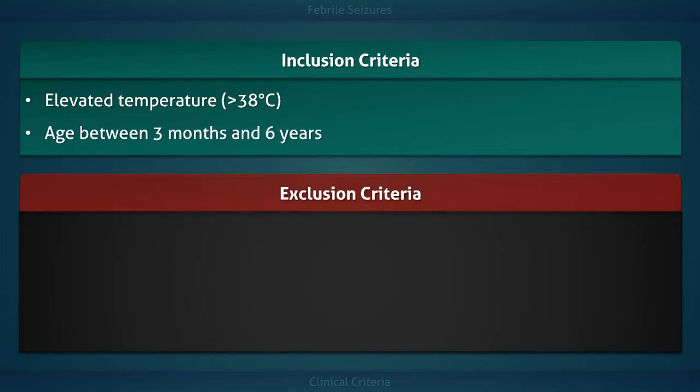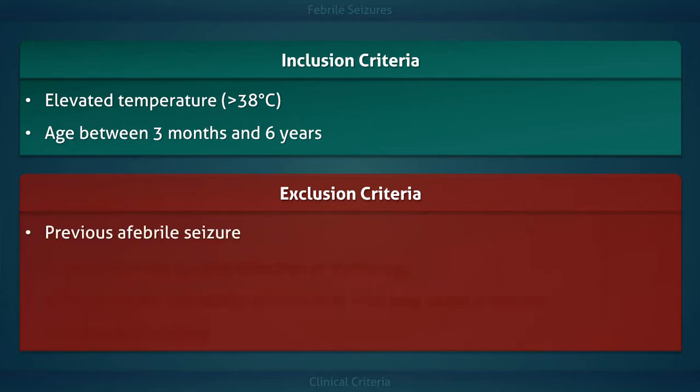There are also four exclusion criteria. The first is a history of a previous afebrile seizure. A seizure that occurs in a febrile child is not considered a febrile seizure if that child has previously suffered an unprovoked seizure or has a specific epilepsy syndrome.